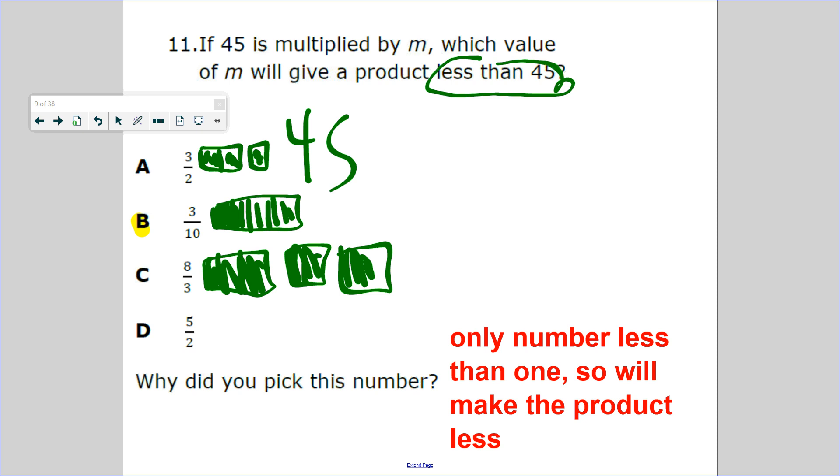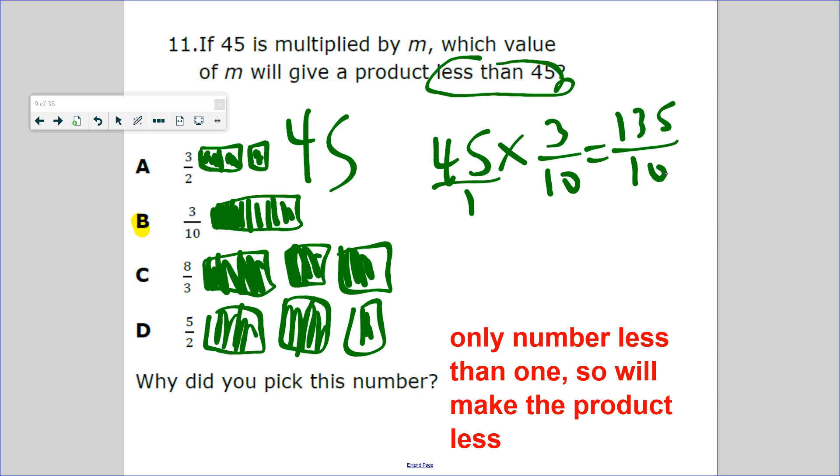Let's check our work. 45 times 3/10. 45 times 3 is 135 divided by 10. That's a lot. Let me see if I did this correctly. 45 times 3 is 15, carry the 1. 135.